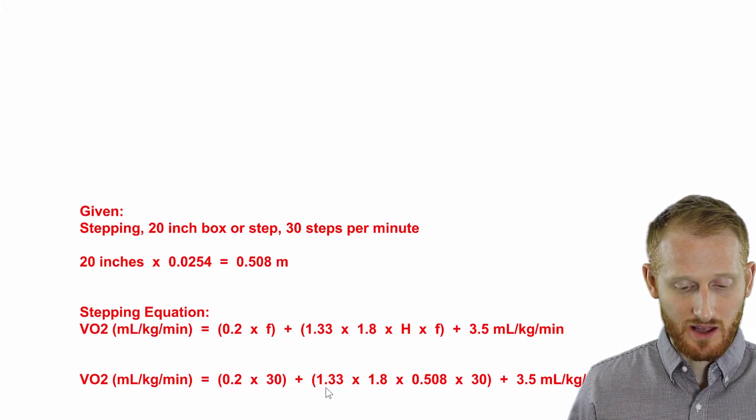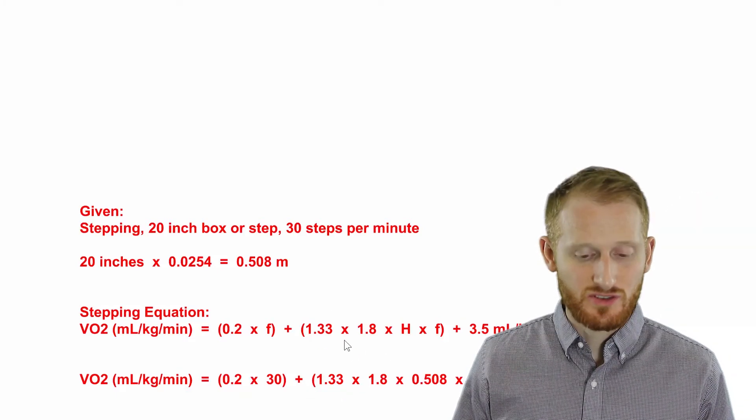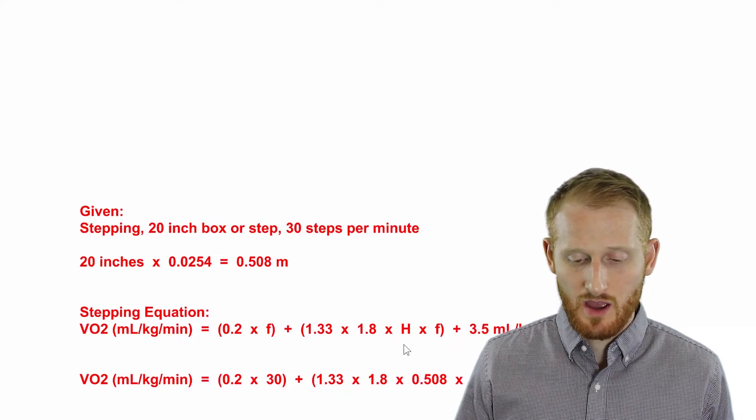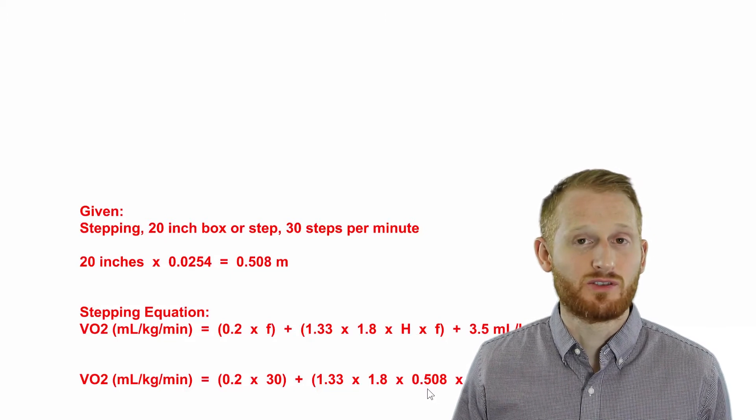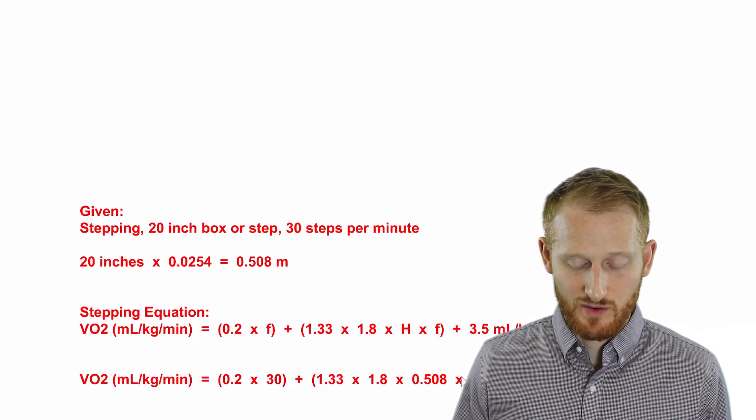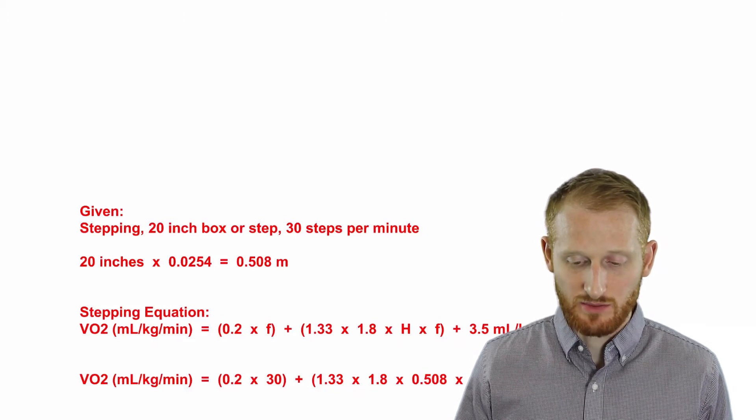And that's in parentheses plus open parentheses 1.33 times 1.8. These are just constant values in this equation. The height represented by H here is the 0.508 meters, and the frequency again is 30 for 30 steps per minute, close parentheses plus 3.5.